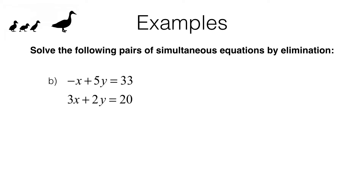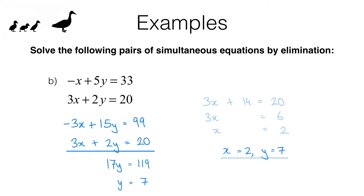Here's example b. Notice straight away that if we tried to add these equations together we wouldn't eliminate the x or the y. So let's think — is there something we could multiply either equation by to eliminate one of the unknowns when added? Hopefully you can see that if you multiply the first equation through by 3, you end up with a negative 3x which will eliminate with the 3x in the other equation. Pause the video and see if you can complete this example.